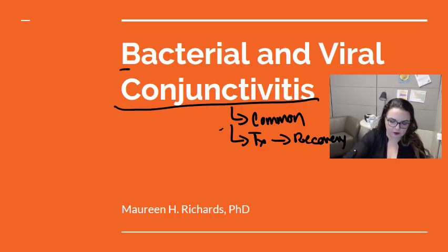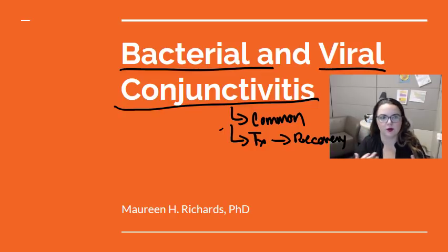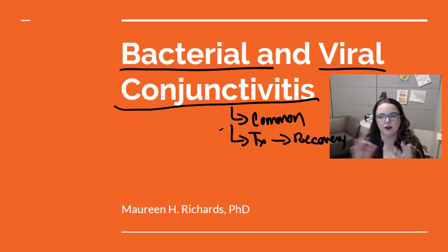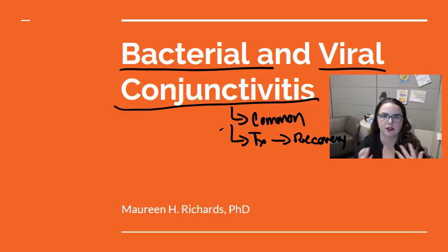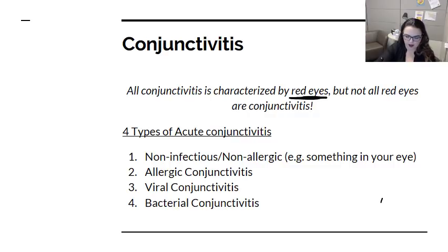In this video I'm largely going to focus on bacterial and viral causes of conjunctivitis. There are also infections that happen in other parts of the eye — parasitic infections, fungal infections — but I'm not going to talk about them here as bacterial and viral conjunctivitis are far more common. The first thing you need to think about with conjunctivitis: all conjunctivitis is characterized by red eyes, but not all red eyes are conjunctivitis.